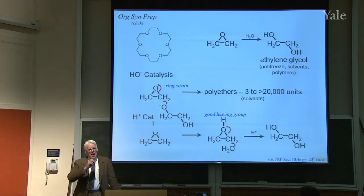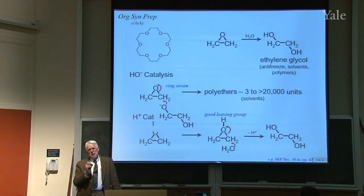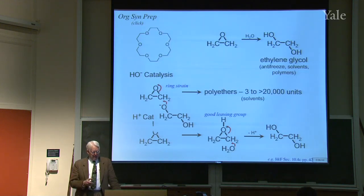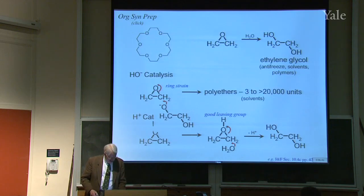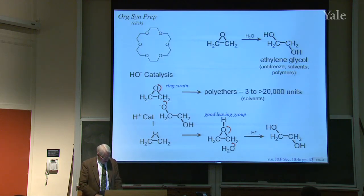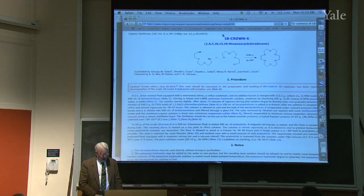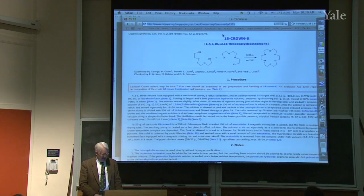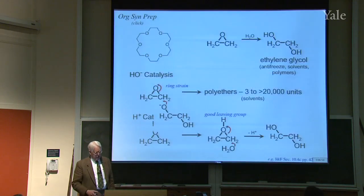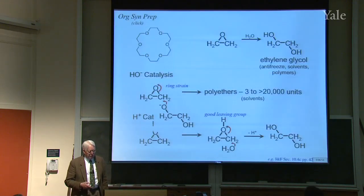It's interesting to note that they used the potassium salt — potassium hydroxide was used to make the dianion. You might think about why that might be. Clicking on the link gives the description of how to make 18-crown-6 from OrgSyn online.